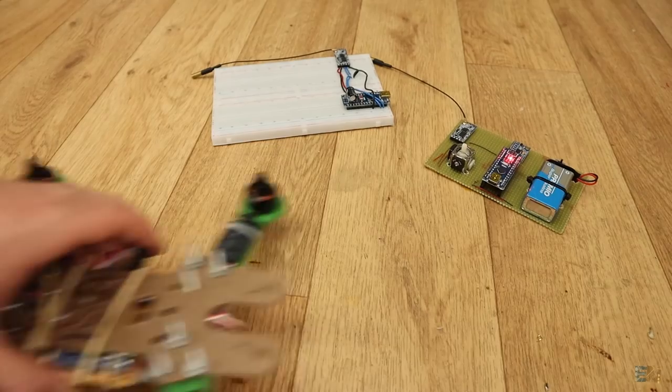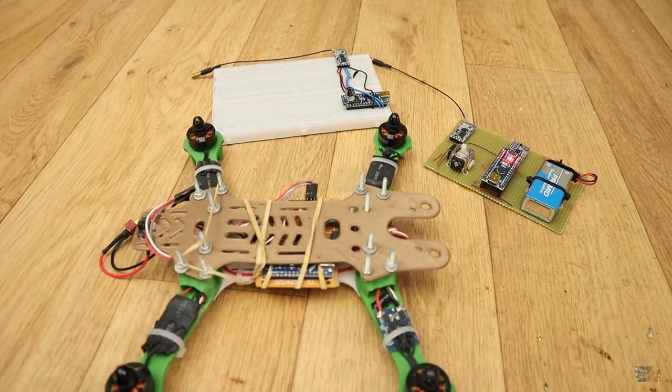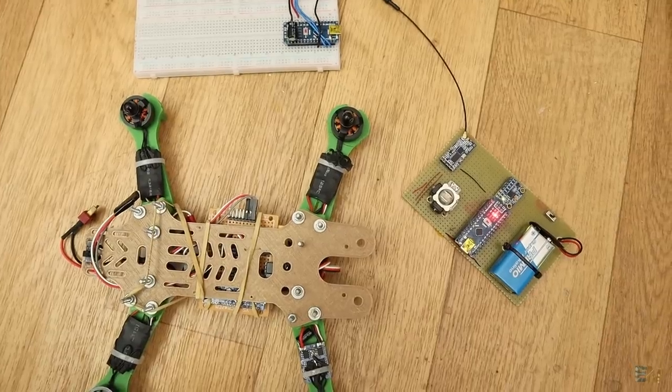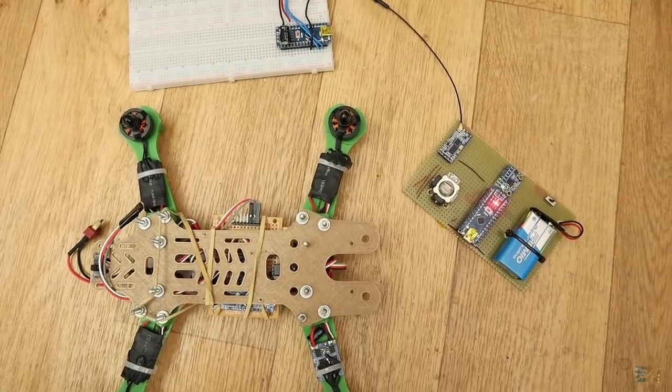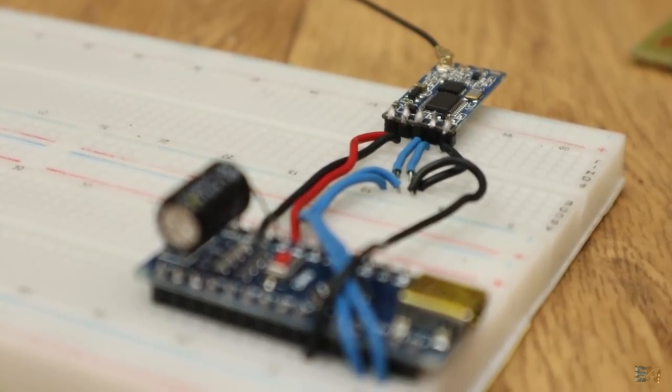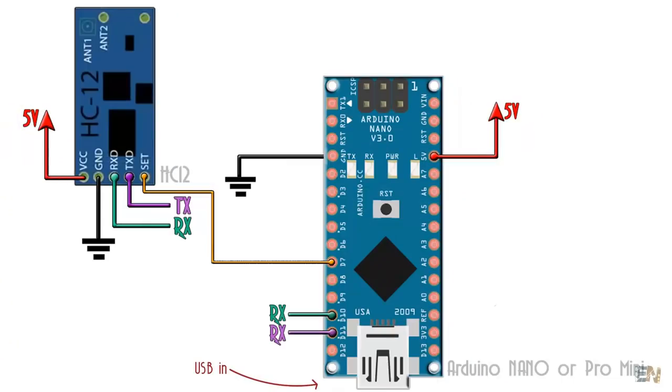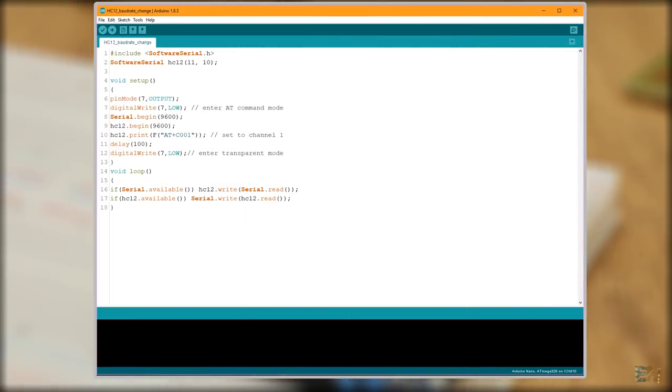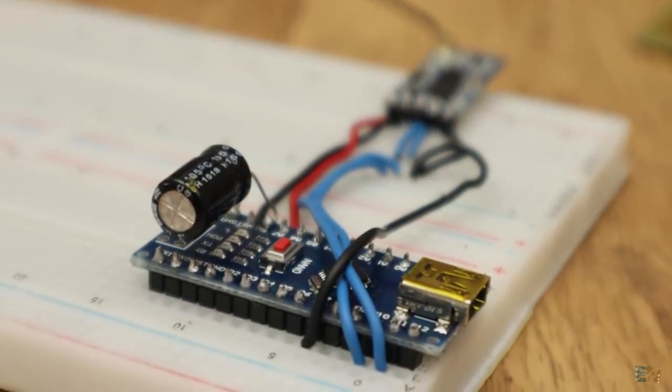It would be nice to control a drone using this. Maybe in a future project. Use the joystick for throttle and the IMU for roll and pitch. Below in the description you also have a code example called Change Baud Rate. Make these connections and upload that code to the Arduino and you could increase the baud rate of the HC12 modules up to 115,200 baud.